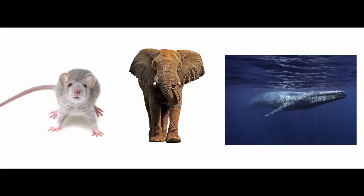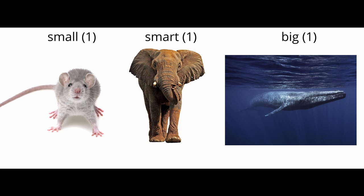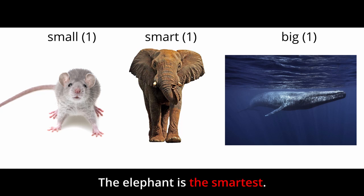Here we see a mouse, an elephant, and a whale. Let's put some adjectives up to describe each: small, smart, big. Each word — small, smart, and big — has one syllable, so we will use the -est in our sentences. Let's use superlative adjectives to compare them. The mouse is the smallest. The elephant is the smartest. The whale is the biggest.